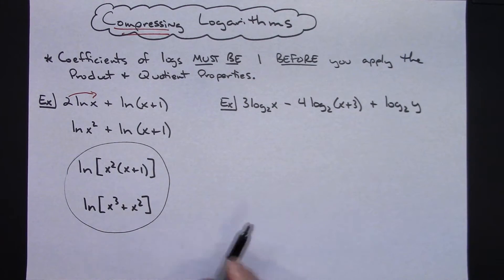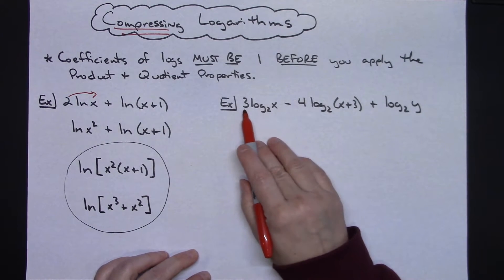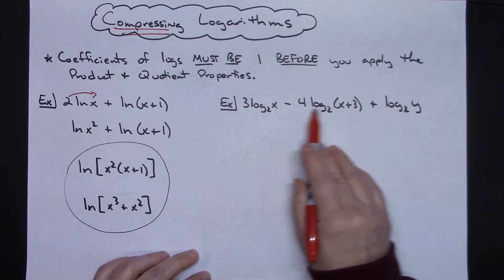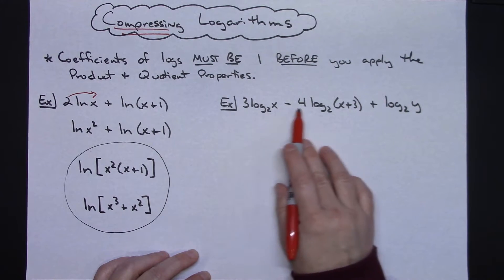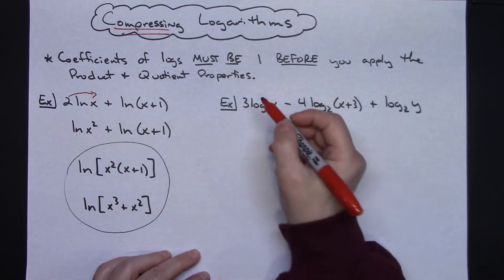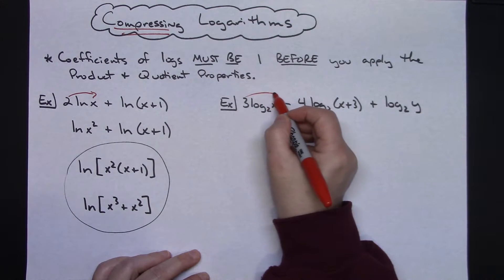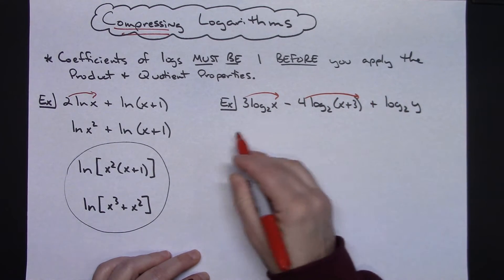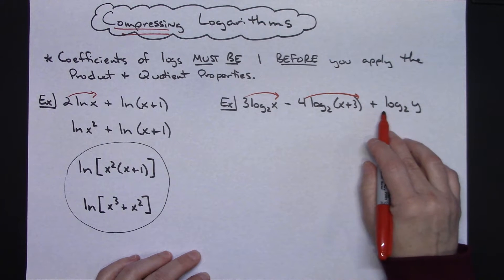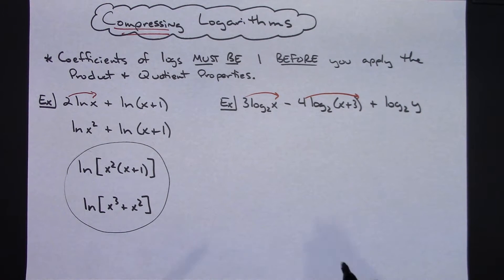Now for the second example, I'm going to do the exact same thing. I'm going to look at what kind of coefficients I have sitting out there. I've got a 3 here and a 4 here so I definitely want to jump the frog, which is what I call it in my classroom, move that 4 and 3 up on top. This one has a coefficient of 1 so I don't have to do anything there.